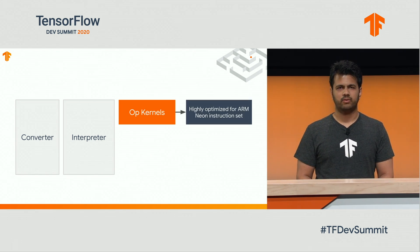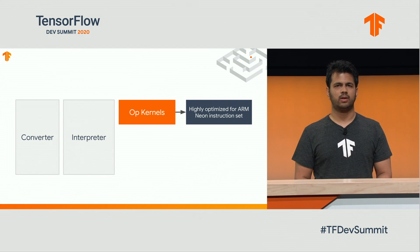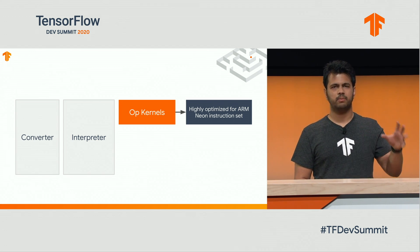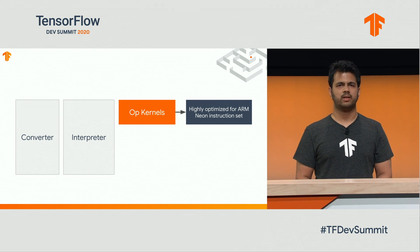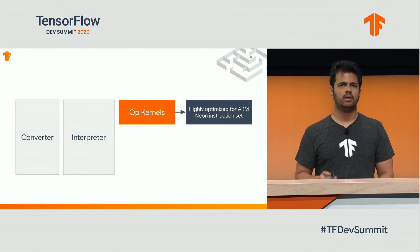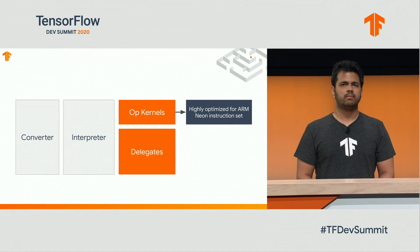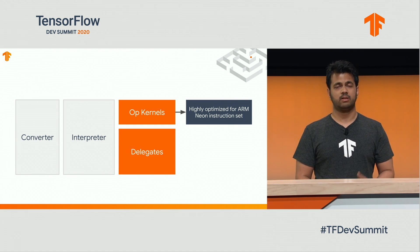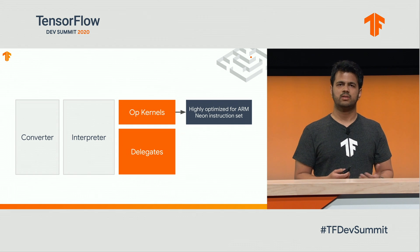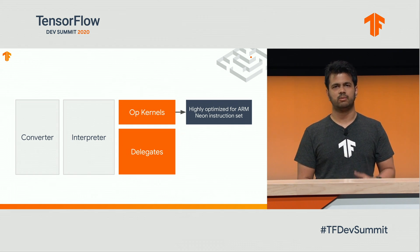By default, models run on the CPU. So the interpreter would call out to our CPU op kernels that are highly optimized for the ARM NEON instruction set. However, most devices these days, especially mobile phones, have a lot of other chips, like mobile GPUs or DSPs.